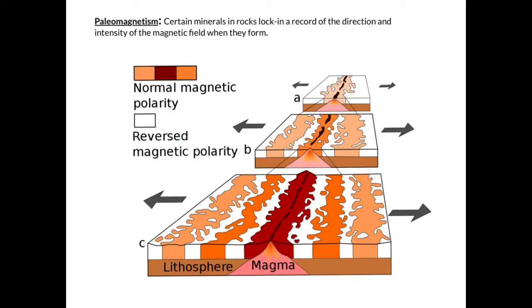So the way that we can actually explain seafloor spreading, because we can't live for millions of years to witness it firsthand, is through the concept of paleomagnetism, which means that certain minerals in rocks lock in a record of the direction and intensity of the magnetic field from which they form. An example of a rock at the ocean floor that does this is basalt, which is forming right there at the mid-ocean ridge.